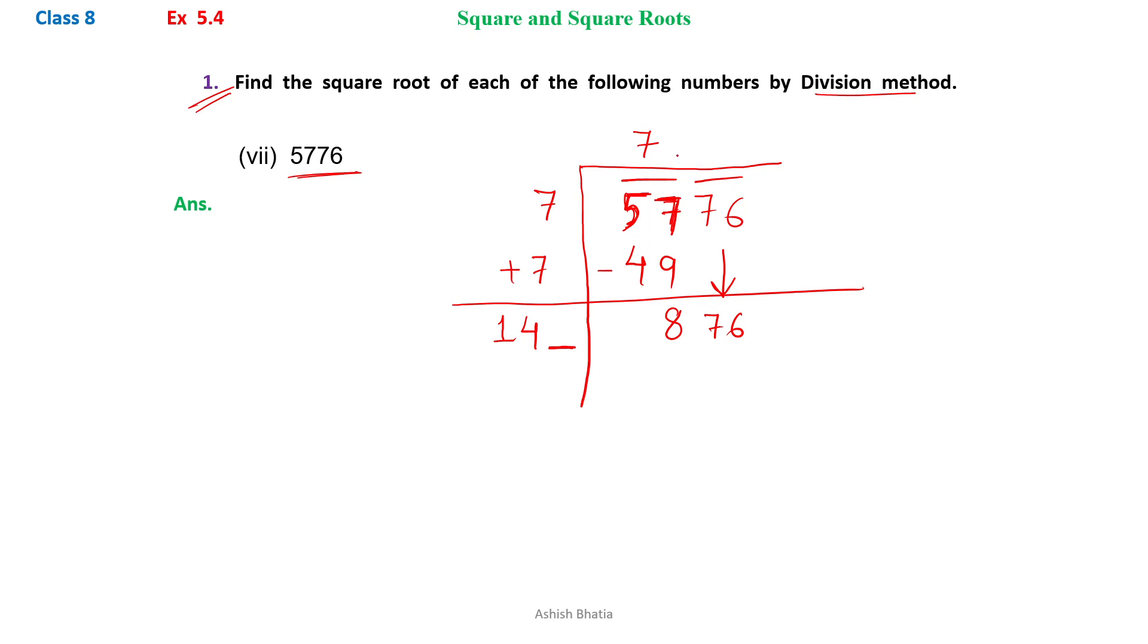Now here we have to write down the number, the same number we have to write here. Now we will assume the number by the last digit here, 6. And here it is 6, so it could be only done either by 4.